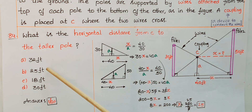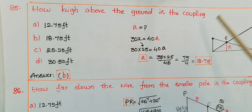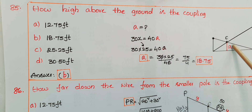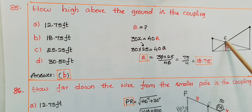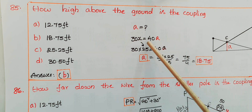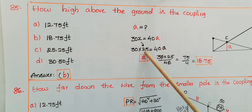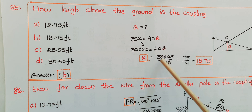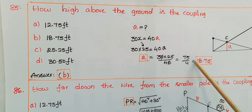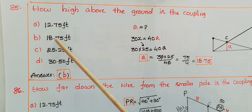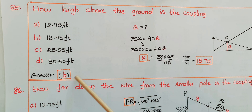So x = 25 feet. The answer is option B. The next question is: how high above the ground is the coupling? That is the value a. From the first equation, 30x = 40a, so 30 × 25 = 40a, giving a = 750/40 = 18.75 feet. The answer is B.